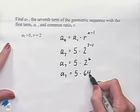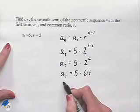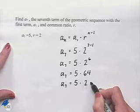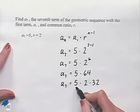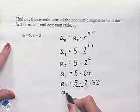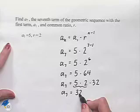Now we can do this mentally if we notice that we can rewrite 64 as 2 times 32 and now regroup. We'll have 5 times 2 is 10 times 32 to give us a₇ equals 320.